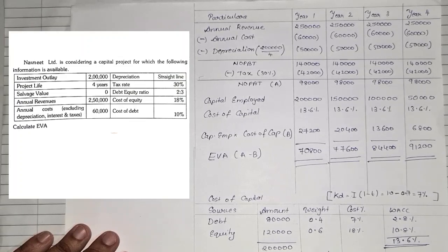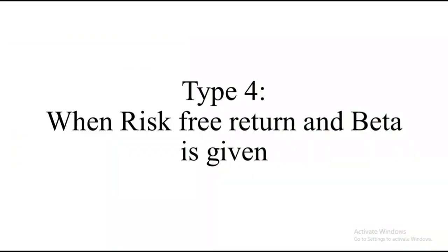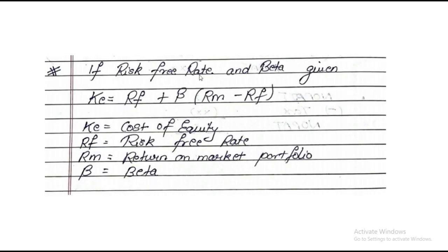That is how you solve a sum when project life is given — using the tabular method. Now let us see the fourth type. Type 4 is when risk-free return and beta are given. When risk-free return and beta are given, the cost of equity formula is: Ke = Risk-Free Return + Beta × (Market Return − Risk-Free Return). You will need this formula because cost of equity won't be given directly.